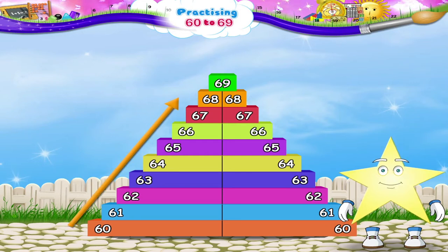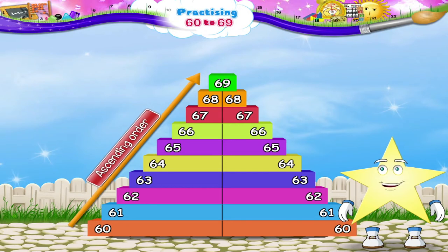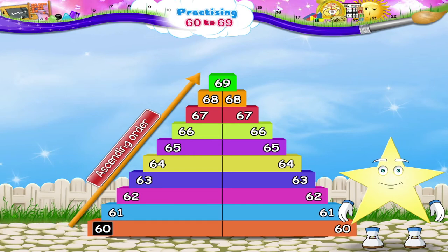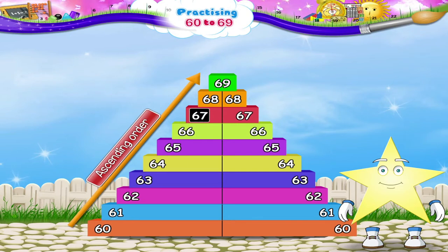Let's begin in the ascending order from the smallest to the biggest. 60, 61, 62, 63, 64, 65, 66, 67, 68, and 69.